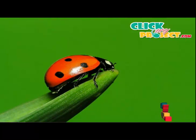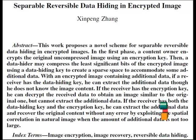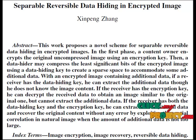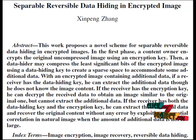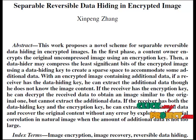Welcome to ClickMeProjects.com. We propose a novel scheme for Separable Reversible Data Hiding in Encrypted Images. In the first process, a content owner encrypts the original image without any compression by using an encryption key. Then these encrypted images are further used for the data hiding process.